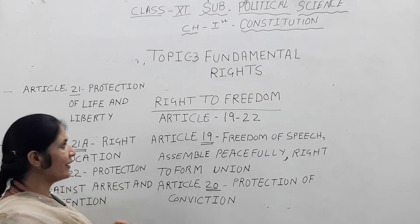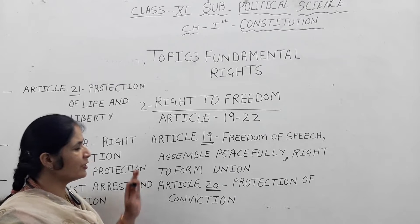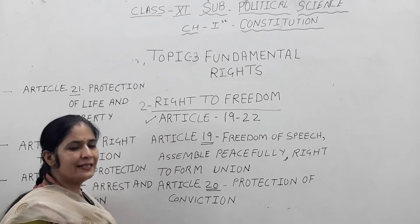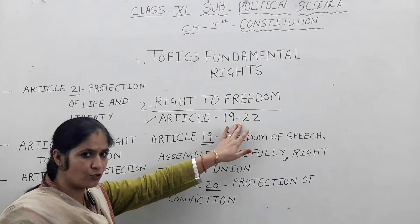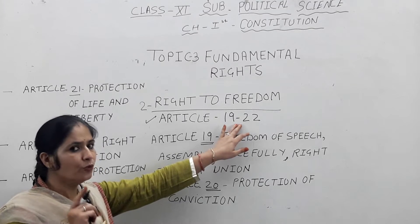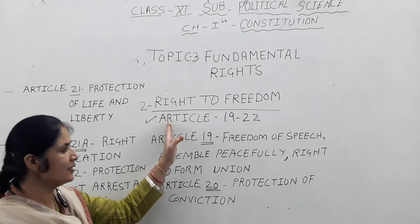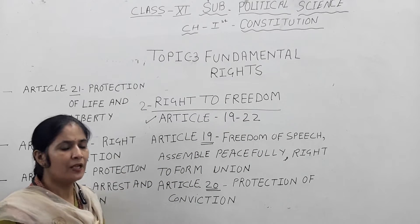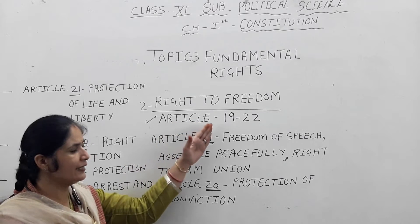Right to freedom is the second fundamental right provided by the Indian constitution. It is provided in article number 19 to 22. Right to equality is provided in article number 14 to 18 — revise it again and again. Article number 19 to 22, the Indian constitution provides right to freedom. You can enjoy a number of freedoms under article number 19 to 22.